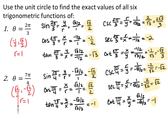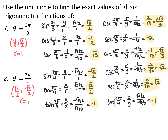For theta equals 7 pi over 4, the coordinate point is (root 2 over 2, negative root 2 over 2) with radius 1. Sine is negative root 2 over 2. Cosine is root 2 over 2. Tangent is negative 1. Cotangent is also negative 1. Secant is 1 over root 2 over 2, which simplifies to root 2. Cosecant is 1 over negative root 2 over 2, which is negative root 2.